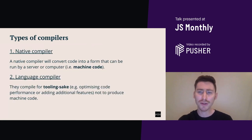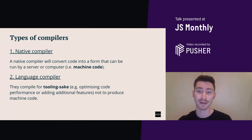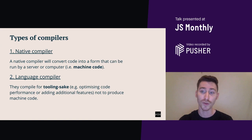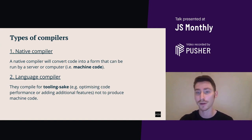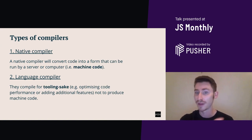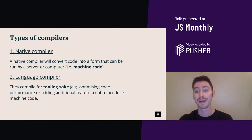There are really two types of compilers which exist. There are native compilers, which convert code into a form that can be run by a server or a computer — i.e. machine code. A compiler such as the one found in the Java ecosystem converts code into bytecode, and then into native machine code.